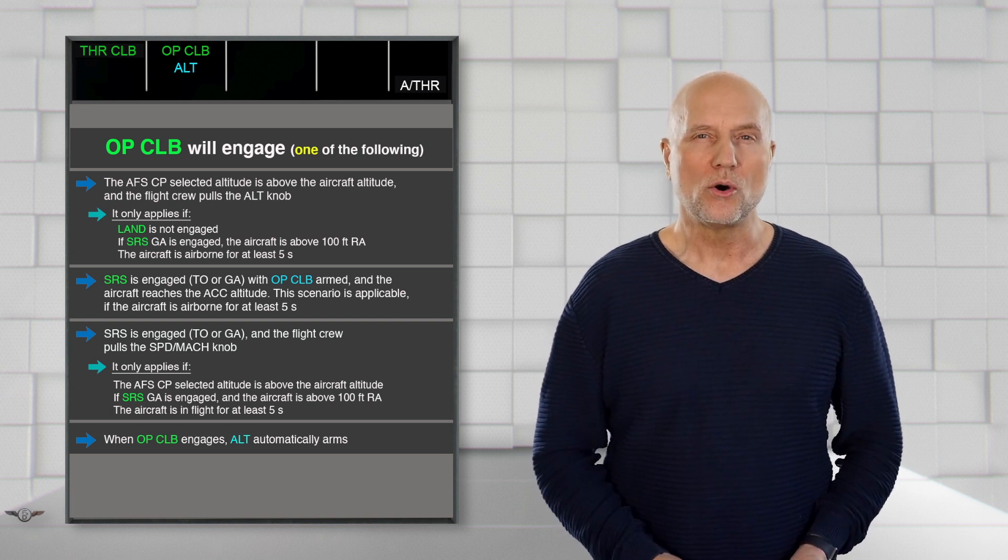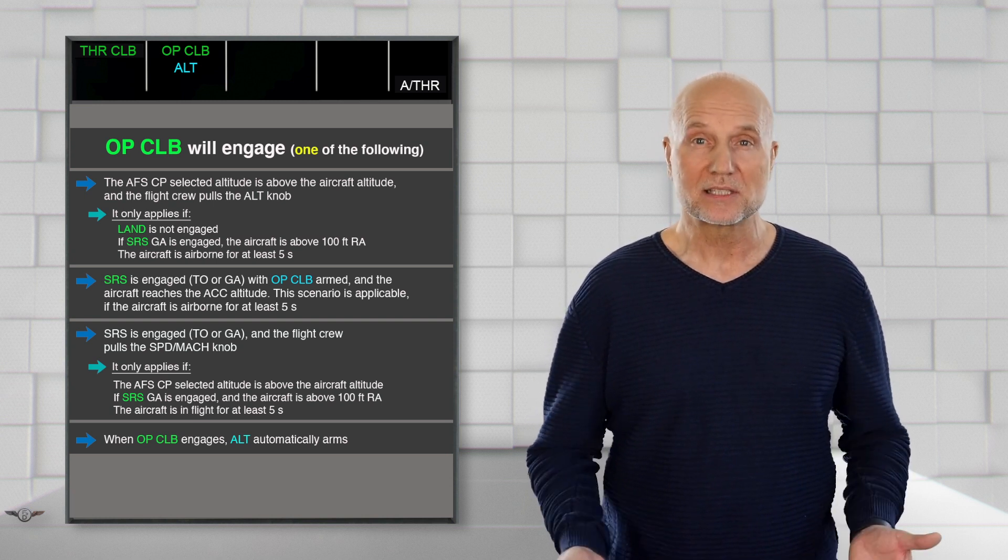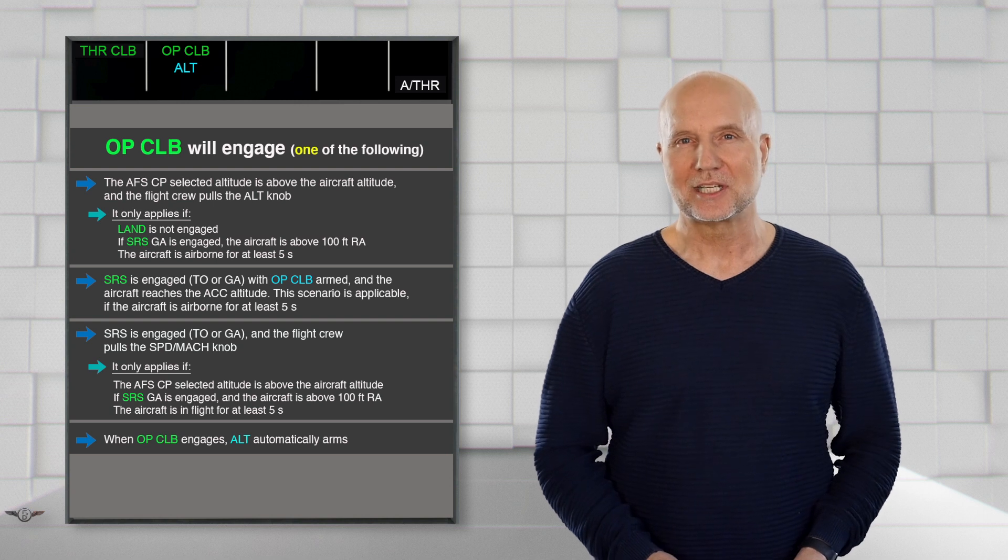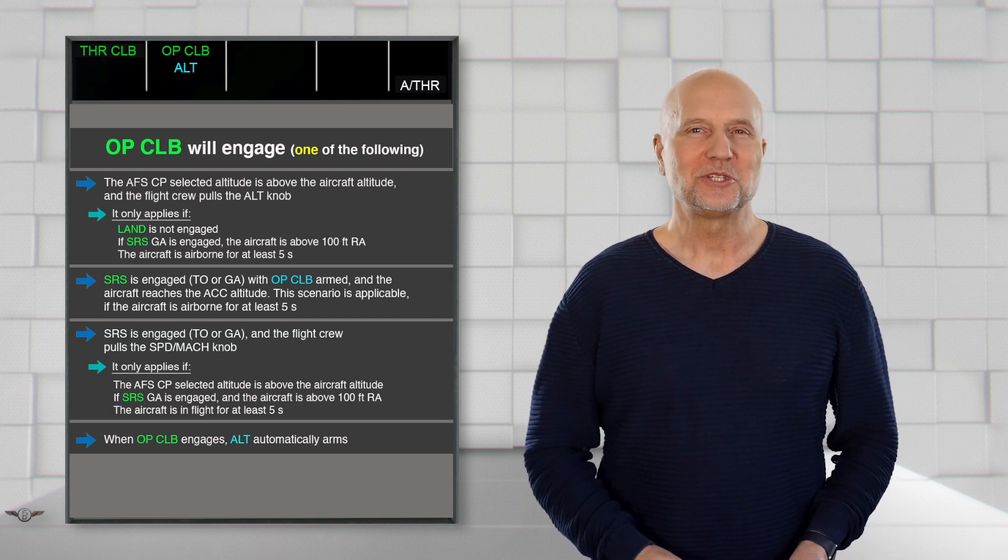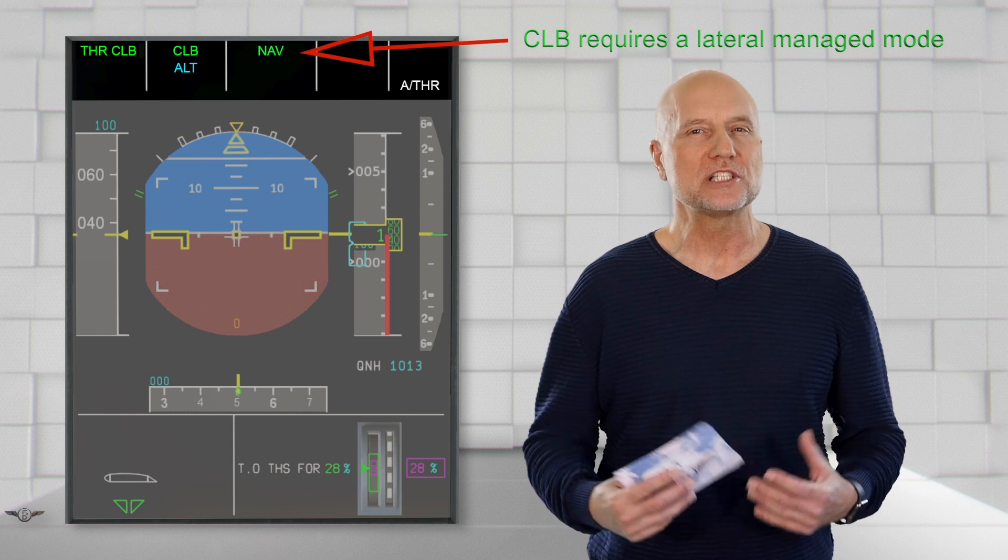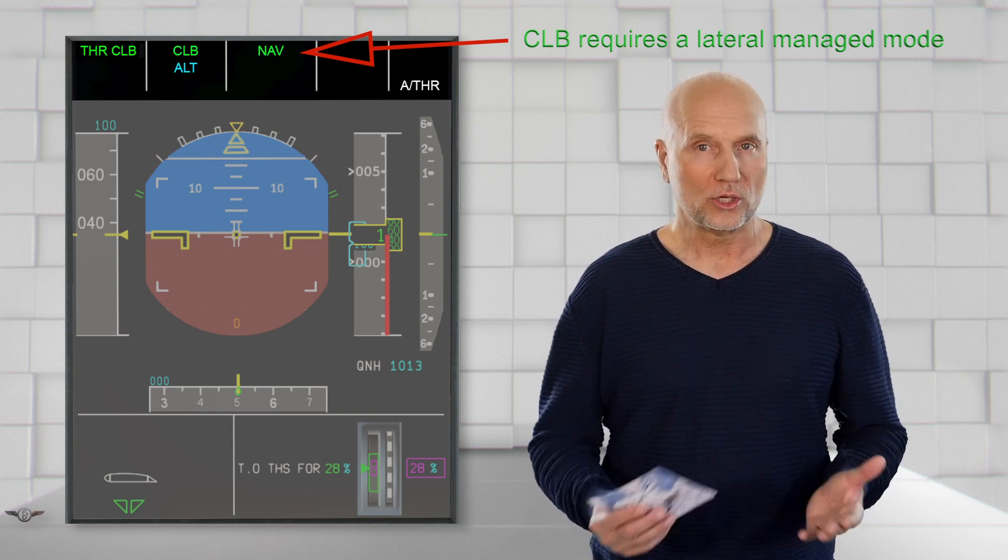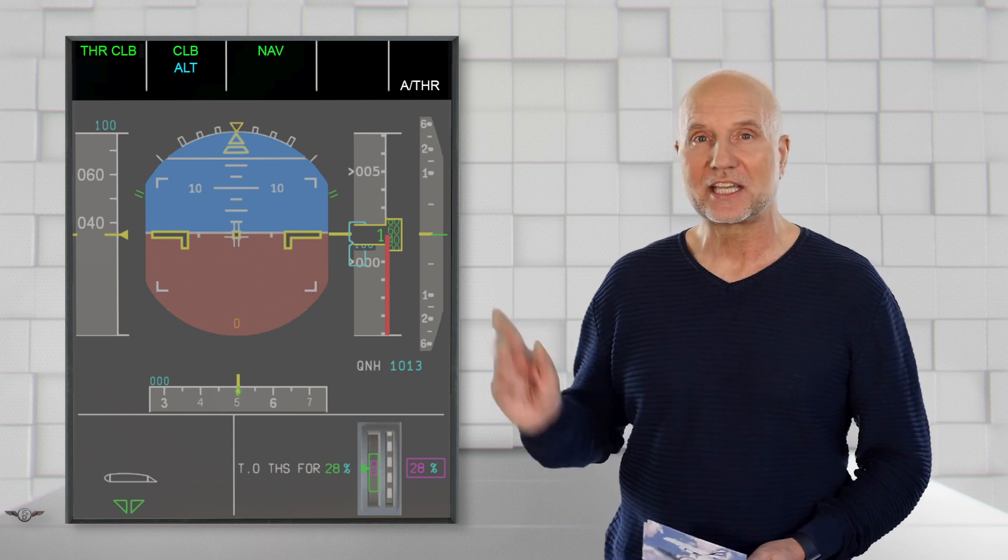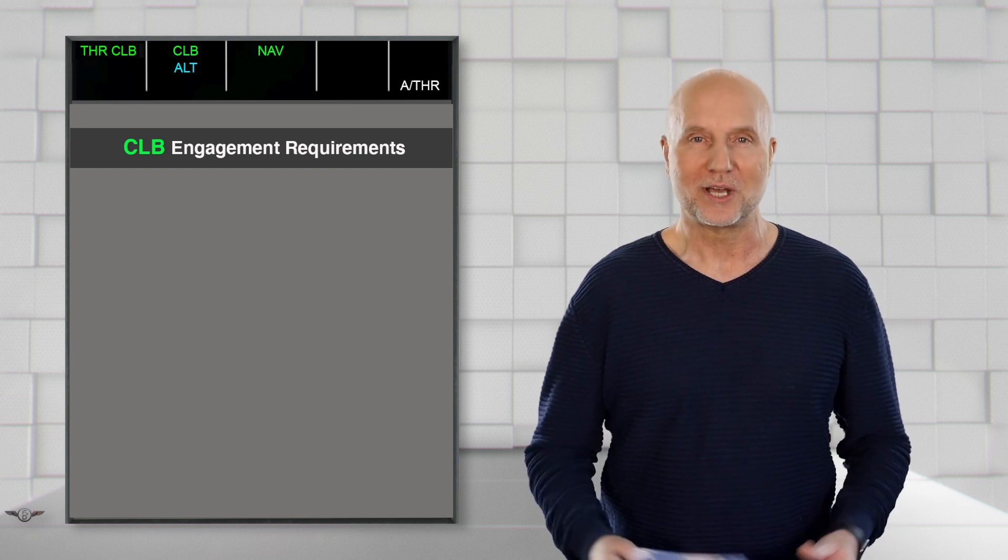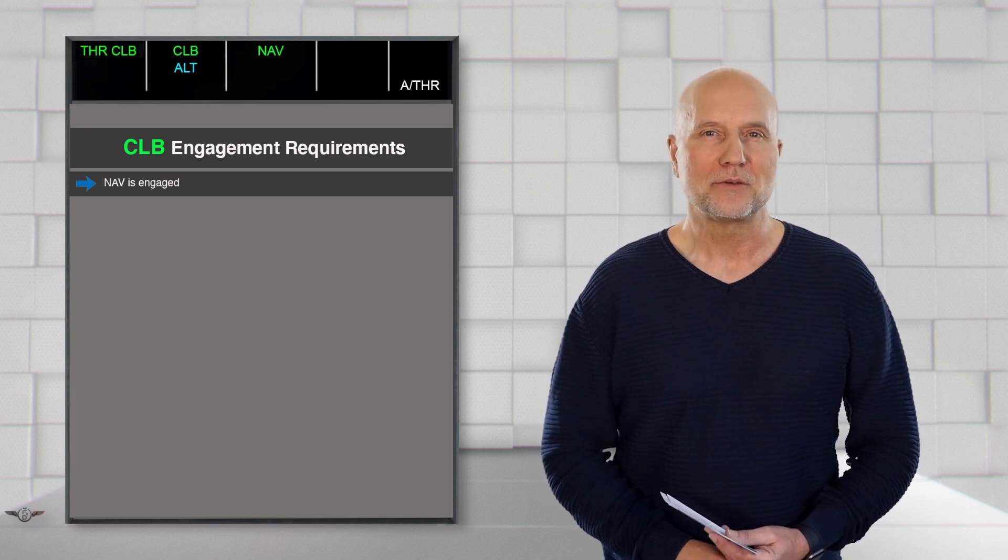Open Climb and Climb modes are always associated with an altitude mode, which makes sense. I would say the moment we decide to climb, we need to have a target altitude selected to climb. I guess the moon would be too far away. Now Climb mode is engaged, and in contrast to Open Climb, Climb is a managed vertical mode as we climb to a specific altitude managed by the FMS. ALT is armed, as we can see in the second row. Let's have a look at the engagement requirements.